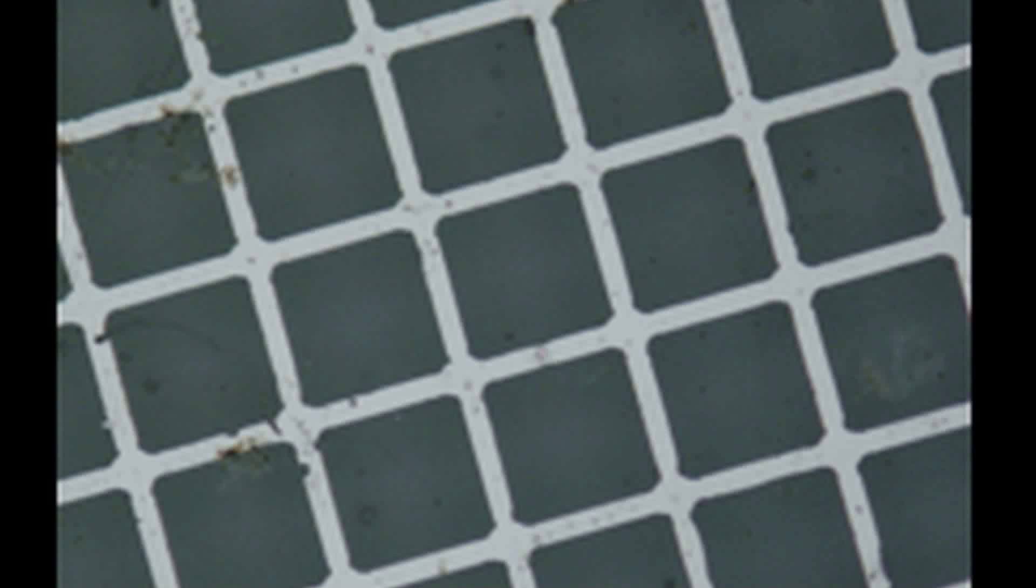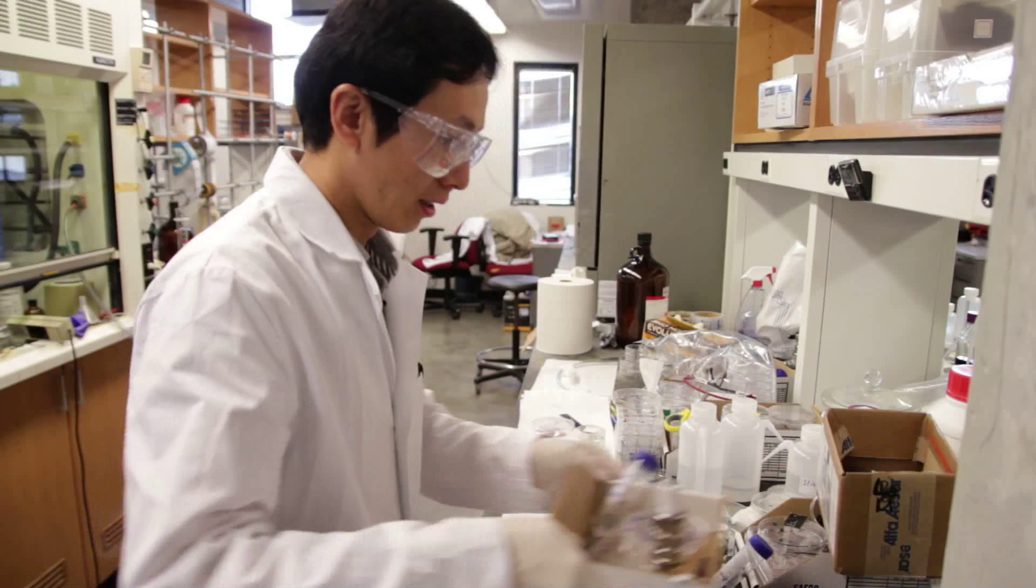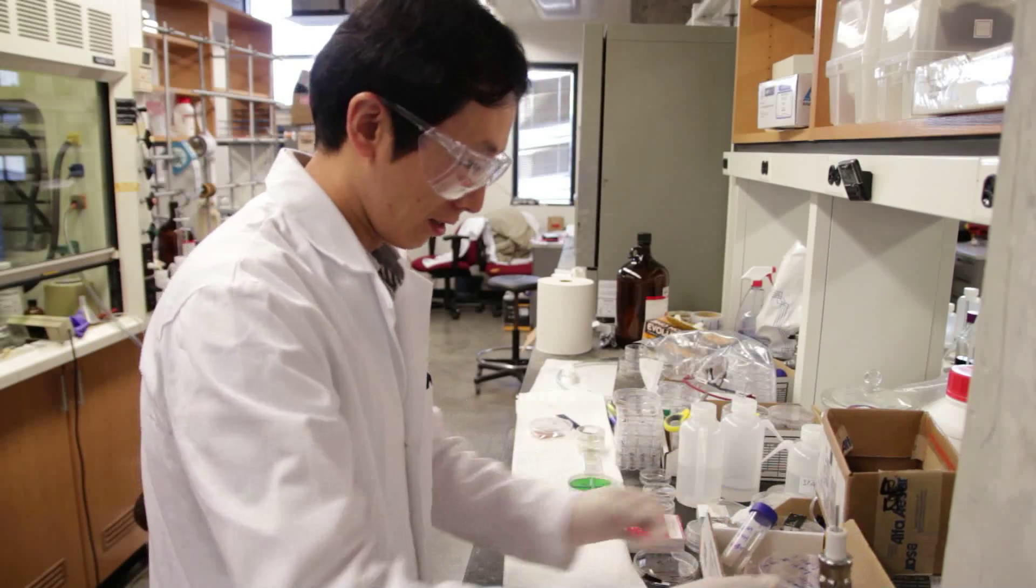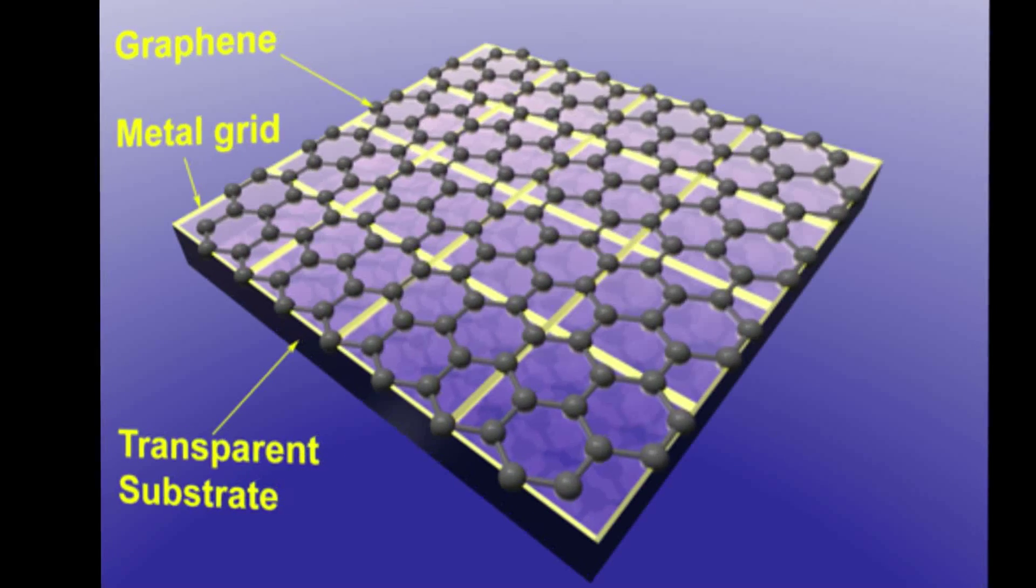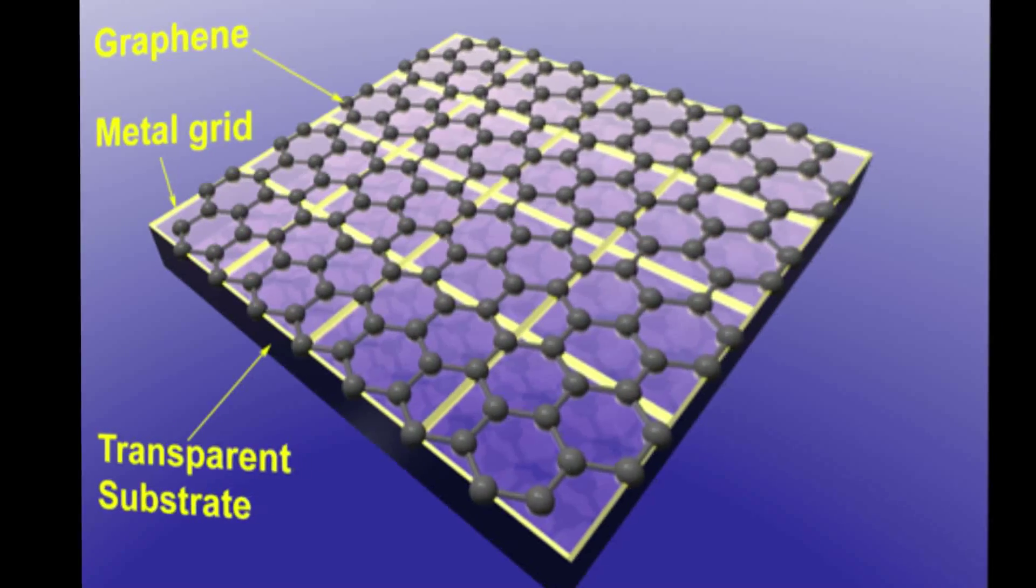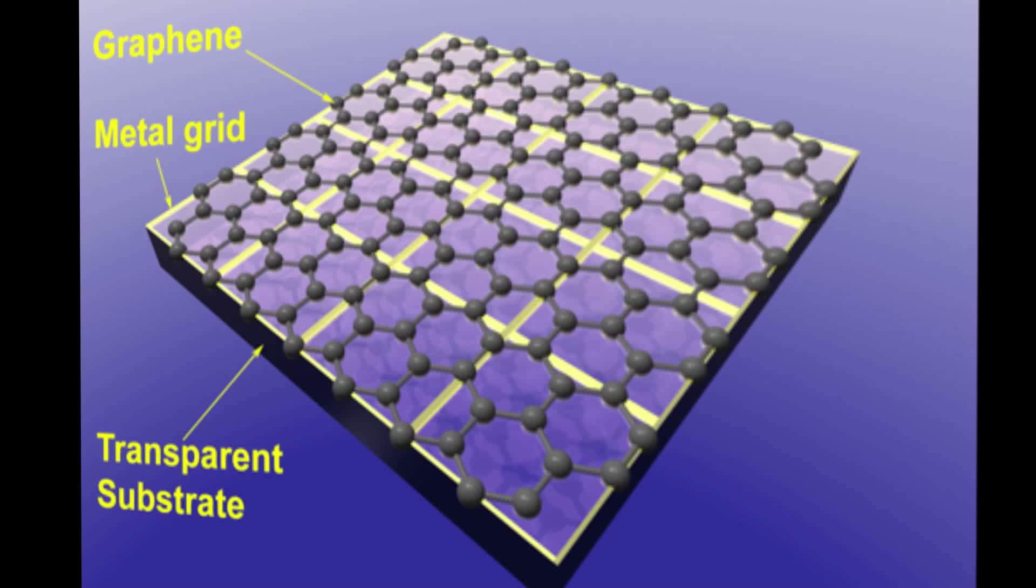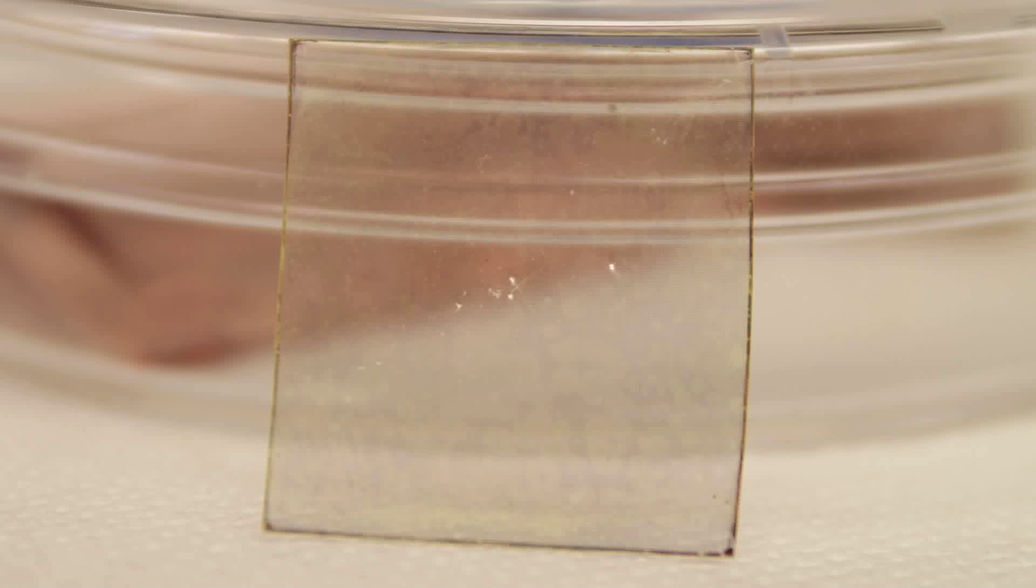What we've found now is that we can just use a grid of wires, and this was found by a postdoc in my group, Dr. Yu Zhu, who found that if you put just a grid of wires and you make very thin wires so that you can't even see them, and then you put the graphene on top of that, then you have a transparent display that has very good conductivity.